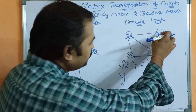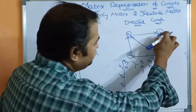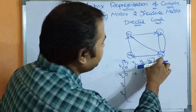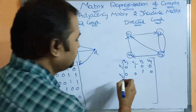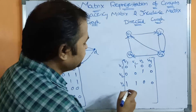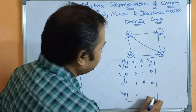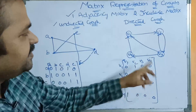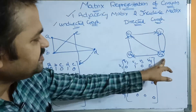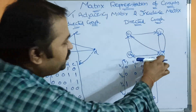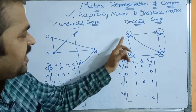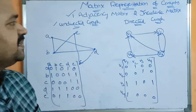If we consider V2, from V2 we have an edge to V3, so that value is 1, remaining values are 0. If we consider V3, from V3 we have an edge to V1, V2, and V4 also. If we consider V4, we have an edge to V1, so remaining values are 0. So this is the adjacency matrix for directed graph.